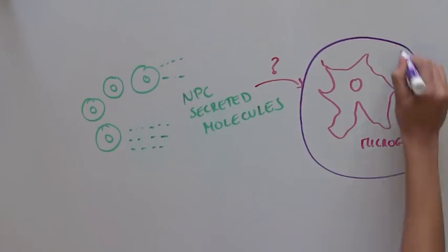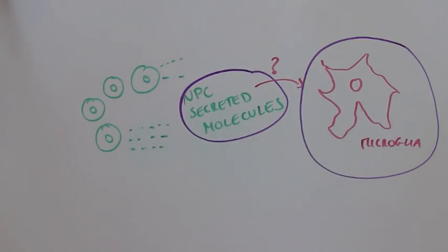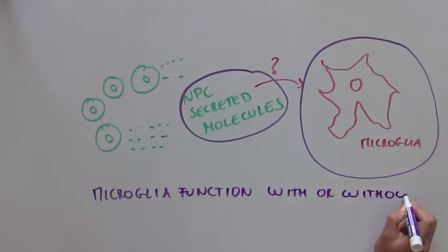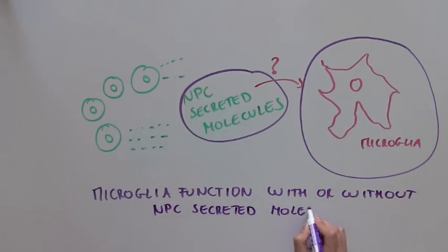To do this, the scientists isolated microglia alone and secreted molecules from NPCs, and examined microglia function when the microglia were in the presence or absence of NPC-secreted molecules.